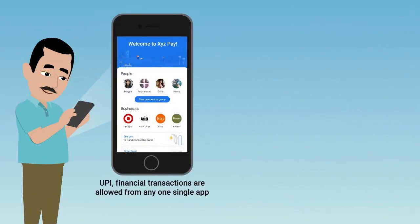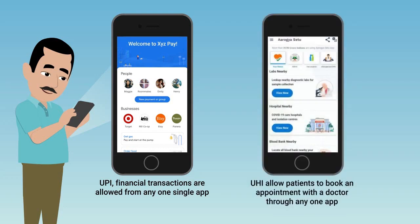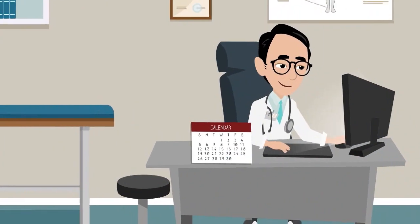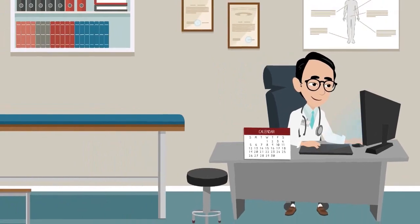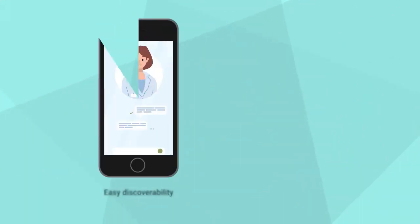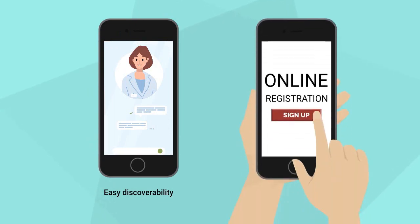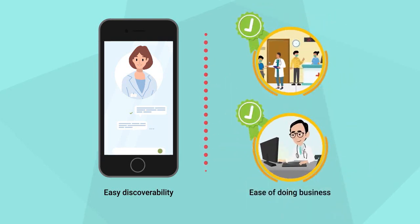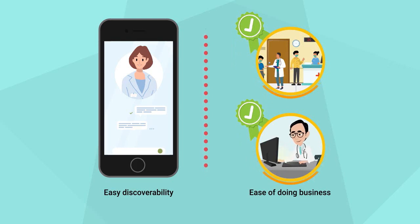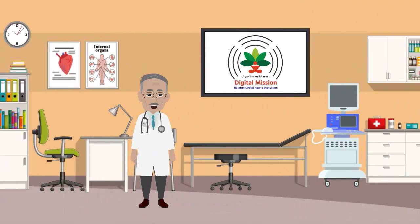Just as UPI allows financial transactions from any single app, such as Paytm or Google Pay, UHI will allow patients to book an appointment with a doctor through any one app. Some benefits of UHI for doctors include easy discoverability — no registration on different health apps is required — and ease of doing business, as more visibility, discoverability, and authenticity support it. In summary, UHI will ensure interoperability and lead to accessible healthcare.